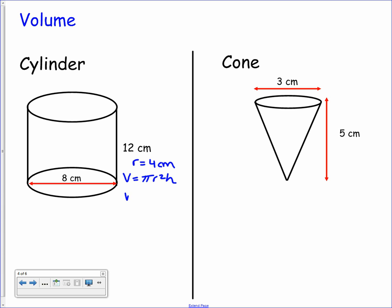Substituting into the formula we have pi times four squared times the height of twelve. This gives us a volume of 603.185 and so on. We don't want a decimal value like this we want to try and round it up. So let's round this up to three significant figures.